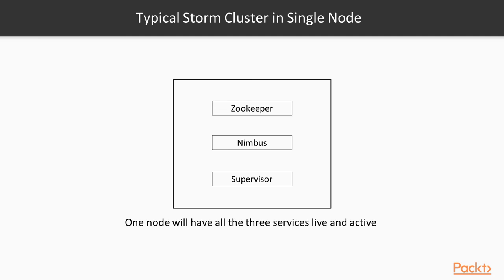One thing we haven't discussed yet is Zookeeper. Zookeeper is an independent service that we need to install separately. Zookeeper is the service used to coordinate between Nimbus and Supervisor. Nimbus is a purely stateless service, so it actually depends on Zookeeper to monitor the working node status. Zookeeper also helps the Supervisor interact with Nimbus and is responsible for maintaining the state of both Nimbus and Supervisor. In our setup, we will first set up Zookeeper, then set up Nimbus and Supervisor during the Storm setup.